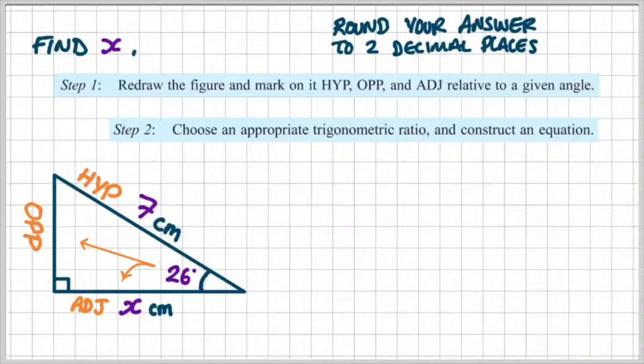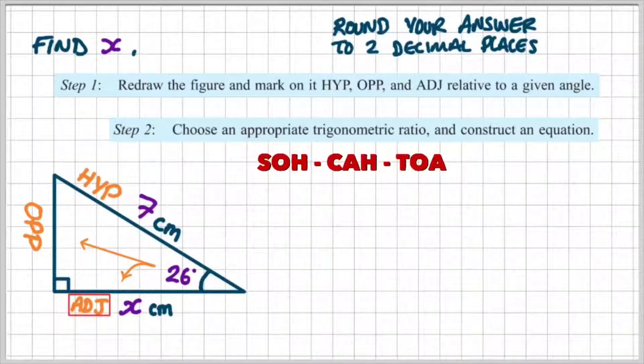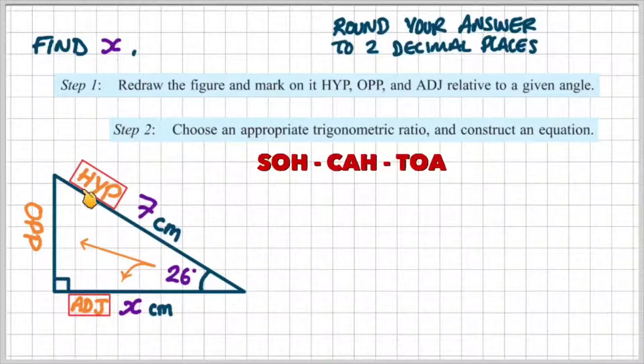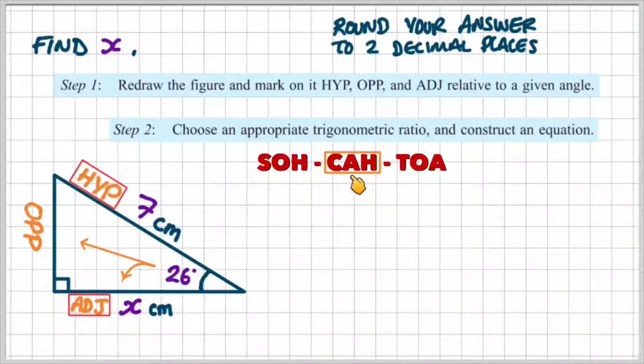So step two, we're going to choose an appropriate trigonometric ratio and construct an equation. Using our acronym SOH-CAH-TOA, we need to find the adjacent and they've given us the hypotenuse, so that's going to be the cosine ratio. Adjacent over hypotenuse is the cosine ratio.